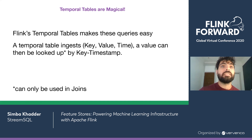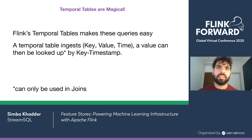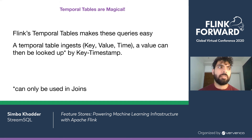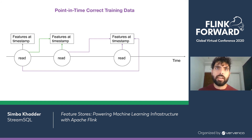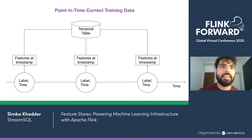The cool thing Flink has that we've been able to leverage to make this logic much easier is temporal tables. A temporal table ingests a key-value-time triplet, and now I can do a key-value lookup but also give it a time, which returns what the value of that key was at that point in time. That's literally the logic we need — it's a perfect fit for the point-in-time correctness problem. Right now temporal tables can only be used in joins, but that's exactly what we need: we have some dataset of reads that we're trying to predict, and we join it with the temporal table of features and we magically get point-in-time correct training data.